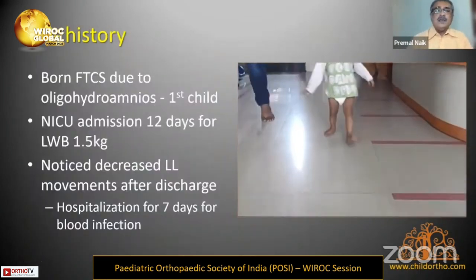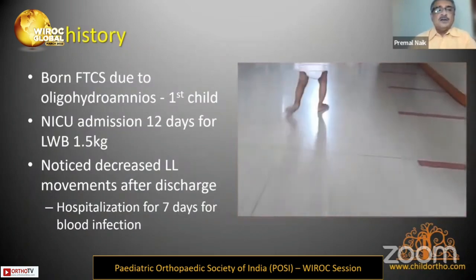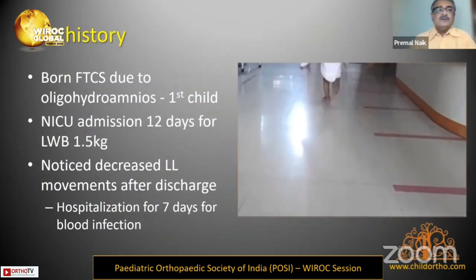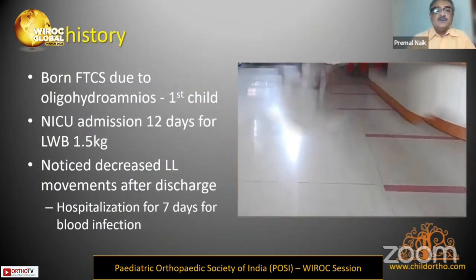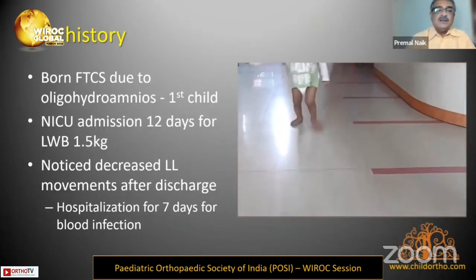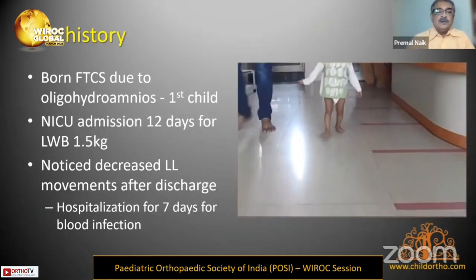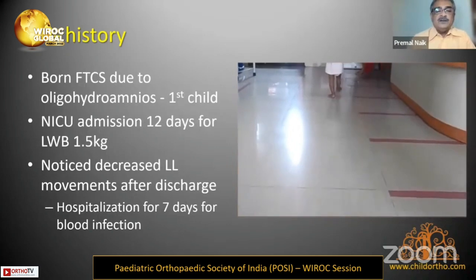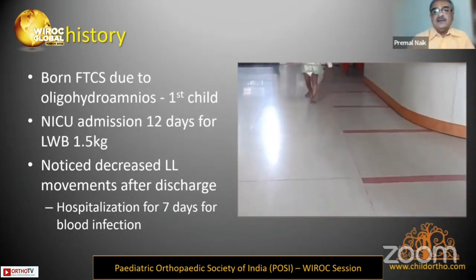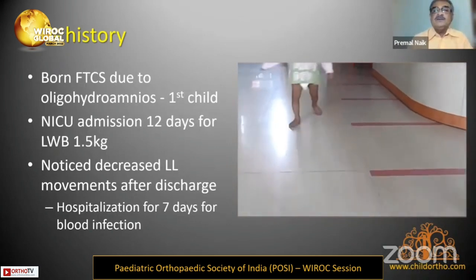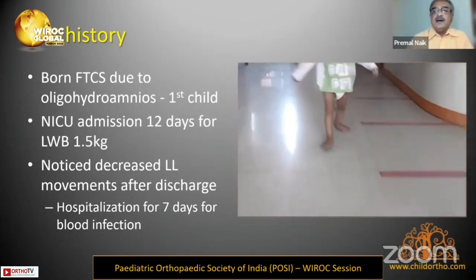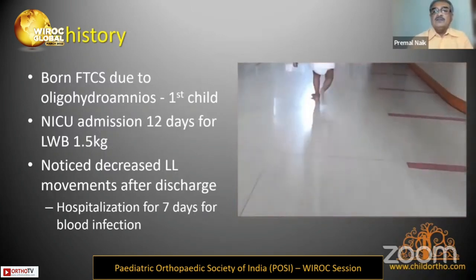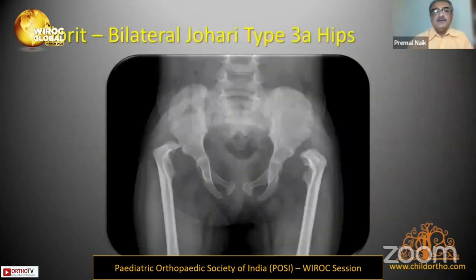The second case is a girl born full-term by cesarean section with ICU admission for 12 days. Decreased lower limb movements were noticed after discharge. She was diagnosed with blood infection and treated with IV antibiotics. She presented to me at one and a half years of age when she started walking with a bilateral limp. The culprit was bilateral Jawry Type 3A hips.